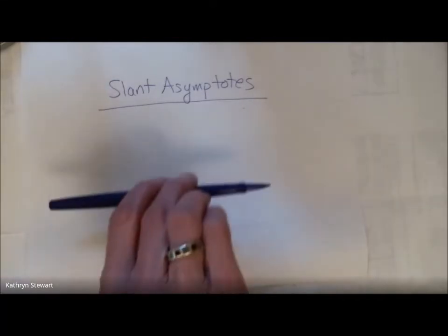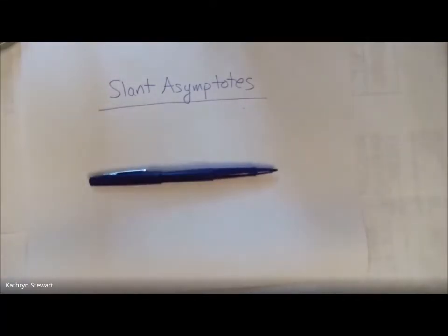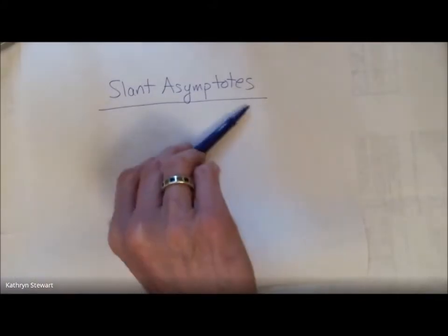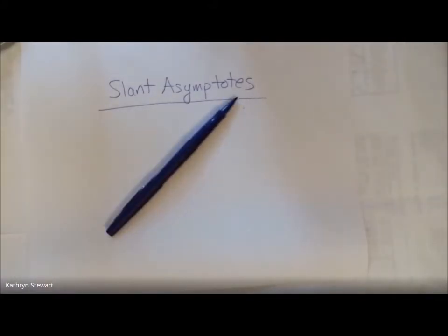We are going to talk about slant asymptotes today. Slant asymptotes tell us about the end behavior of some rational functions. They're like horizontal asymptotes, except that they are on a slant. That's what makes an asymptote a slant asymptote. Let's see what they're all about.